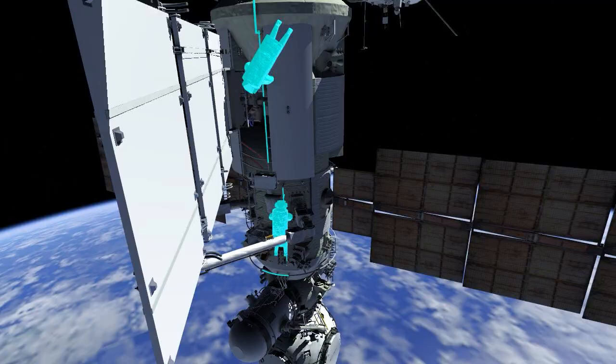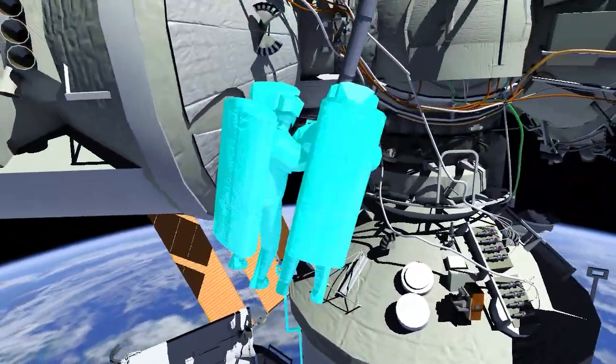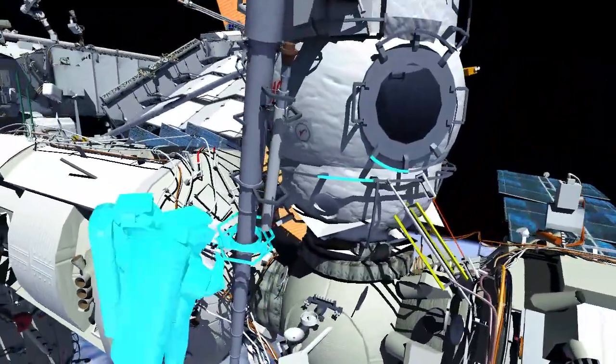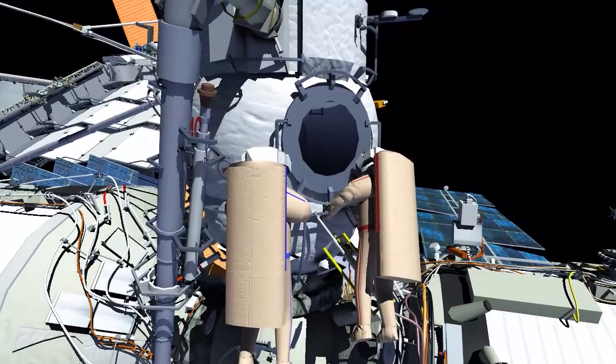Once complete, they'll translate back to the Poisk airlock via Strela-1, where they'll perform a tool inventory, inspect each other's suits, ingress, and close the hatch, ending Russian Spacewalk 58.